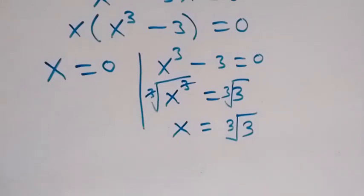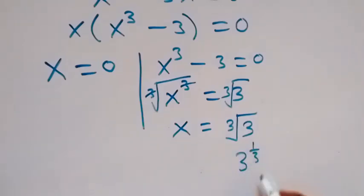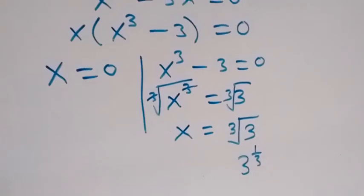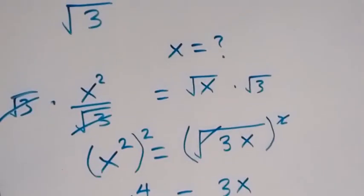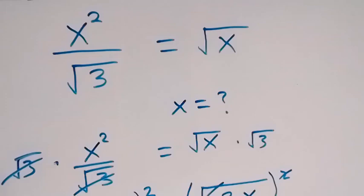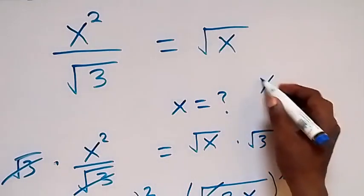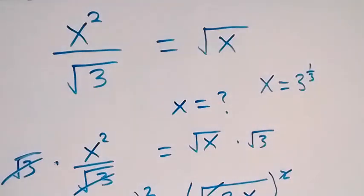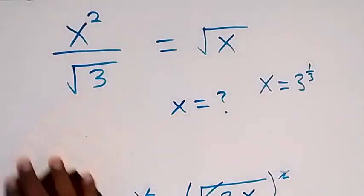So the value of x in this given problem is the cube root of 3, which can also be written as 3 to the power of 1 over 3. To check, let us quickly substitute the value of x back into the original equation to see if it satisfies the problem.